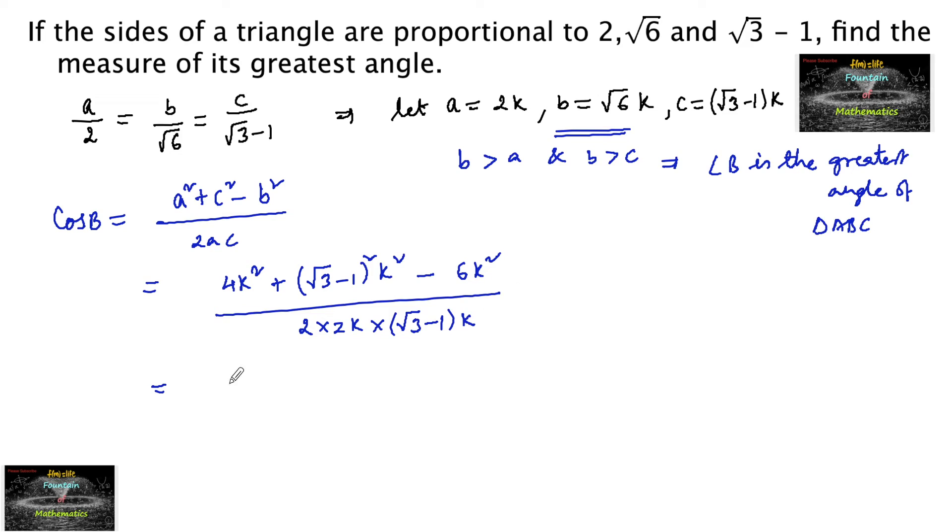You can take out the common k squared in the numerator: 4 minus 6, that is minus 2, plus root 3 minus 1 whole squared. We can expand: 3 plus 1 minus 2 root 3, upon 2 times root 3 minus 1. We can also take k squared outside: 2k squared times 2 times root 3 minus 1.